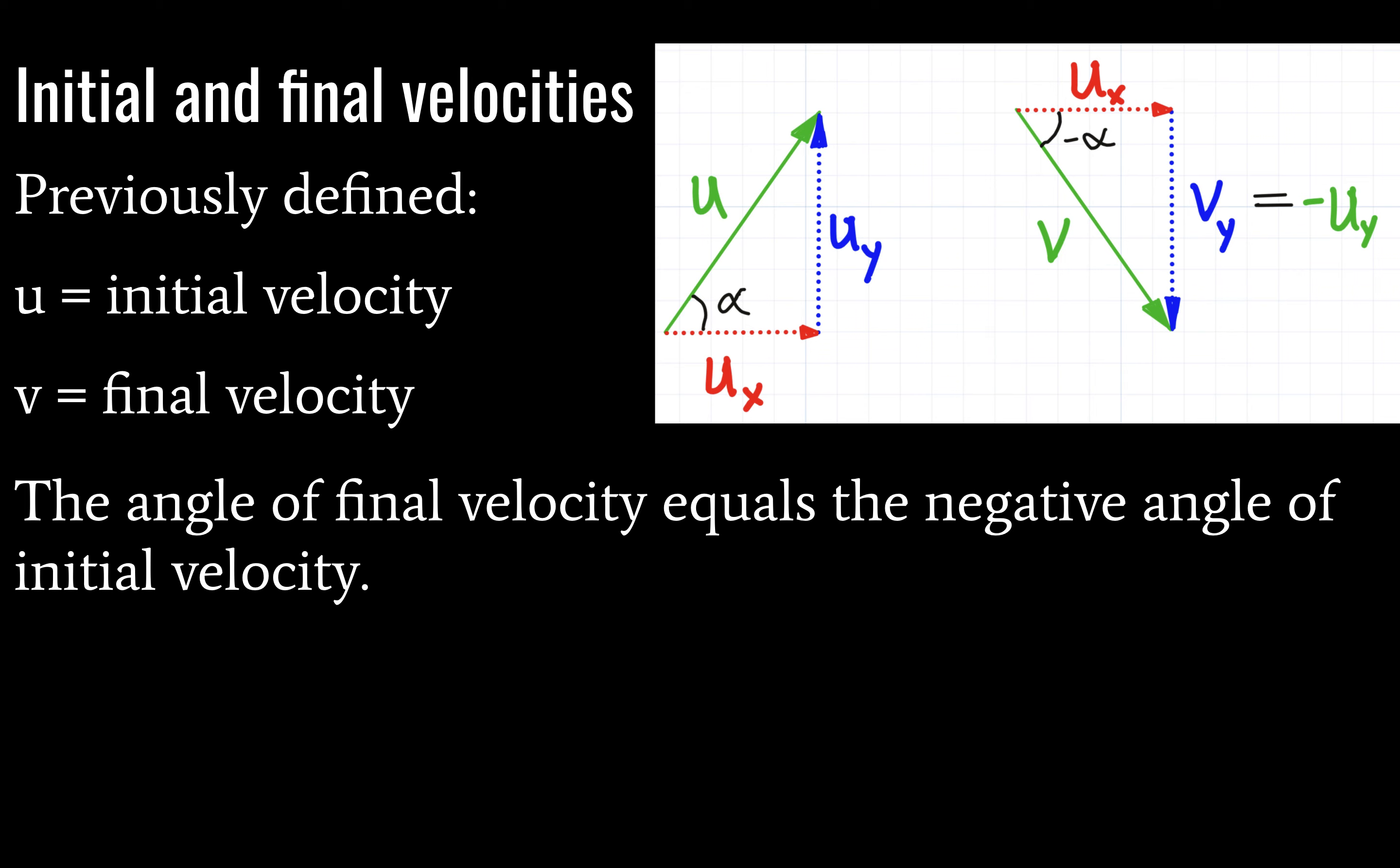Note here that the angle of final velocity is going to be equal to the negative angle of initial velocity. So I've defined that angle here as alpha, and for our initial velocity, and for our final velocity, it will just be negative alpha. Remember, we always measure the angle of a vector off of the horizontal pointed to the right.